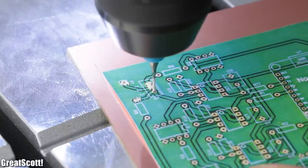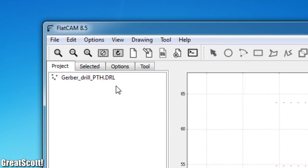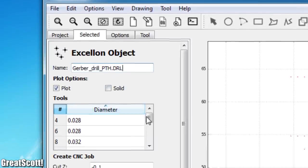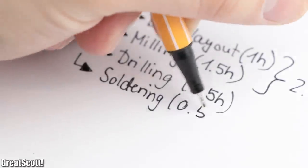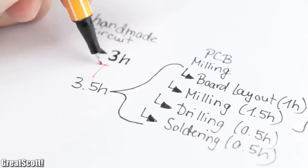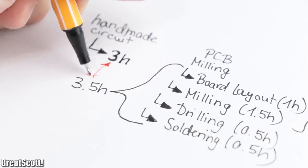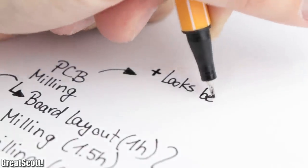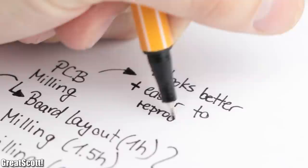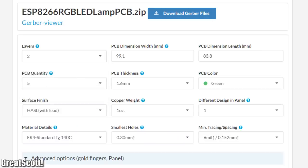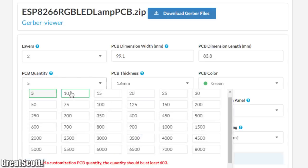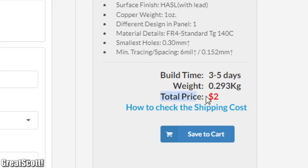And once we add the time to drill the holes for the PCB, which is also possible to do with the FlatCAM software and thus the CNC, and the time to solder in all the components, we easily exceed the three hours of my handmade perfboard soldering. Now of course, a milled PCB looks better and is easier to reproduce, but then again, ordering a professionally made PCB has the same advantages and is nowadays dirt cheap.